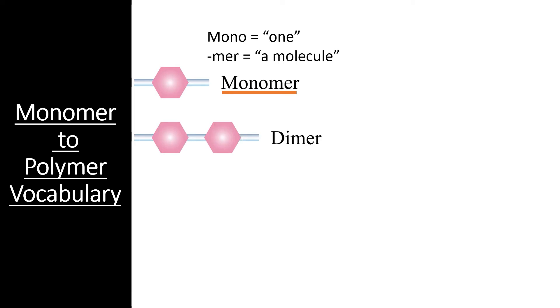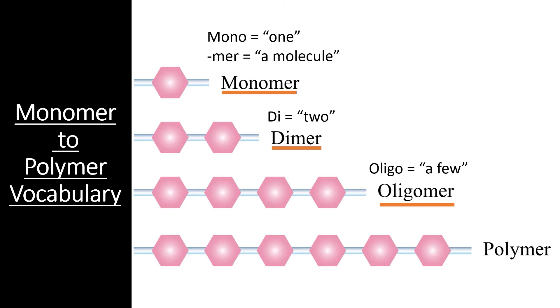Likewise, when you combine two base molecules, you get a dimer. Di means two. Similarly, three or more monomers makes an oligomer. Oligo means a few. Lastly, a polymer simply means many molecules. Macromolecules are simply long polymer chains.